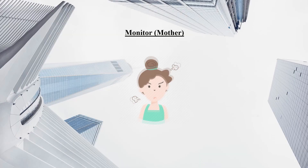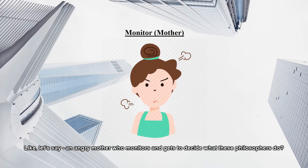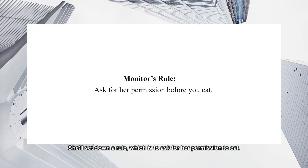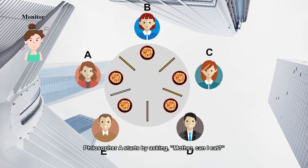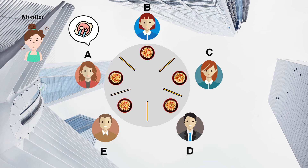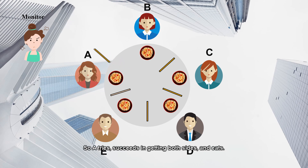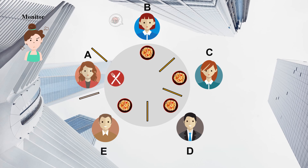How about we introduce a monitor to the situation? Like, let's say, an angry mother, who monitors and gets to decide what these philosophers do. She'll set down a rule, which is to ask for her permission to eat. Philosopher A starts by asking, 'Mother, can I eat?' So the mother responds, 'Sure, go ahead and try.' So A tries, succeeds in getting both sides, and eats.